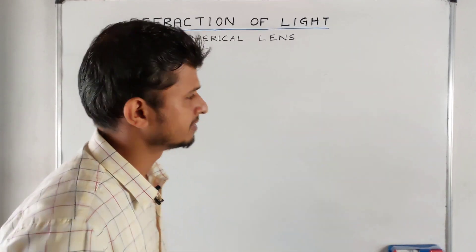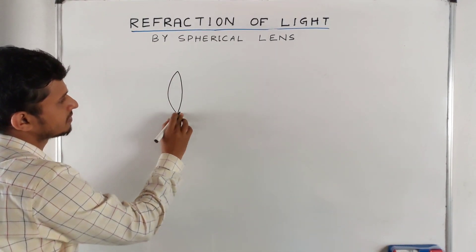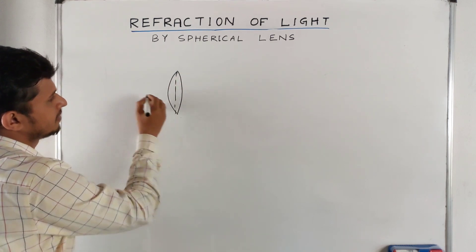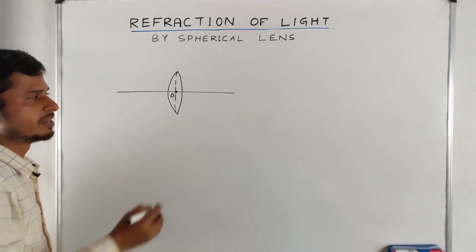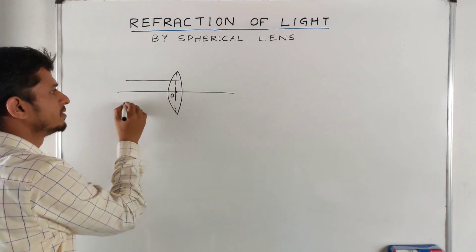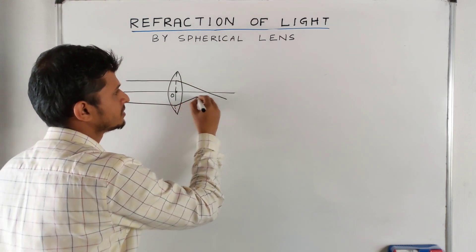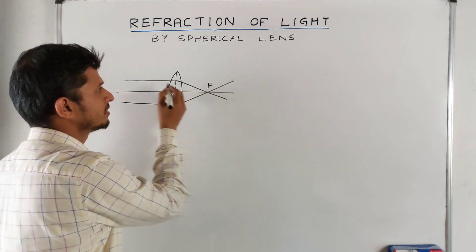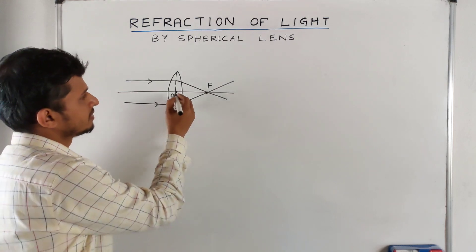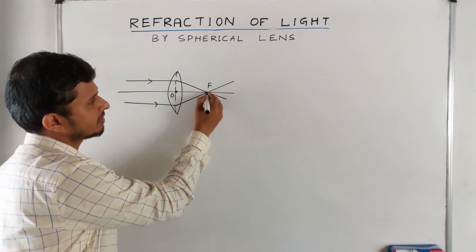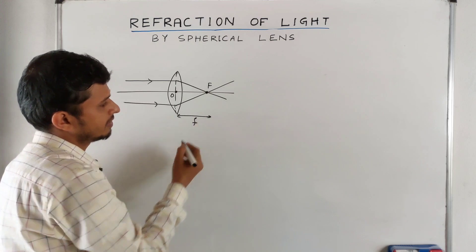Refraction of light by spherical lenses. First part: convex lens. This is the optical center. A parallel ray of light passing through the lens converges in this direction and the point is called the focus or focal point. The distance between the optical center and the focus is called the focal length.